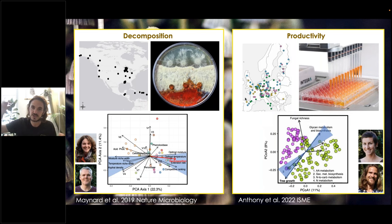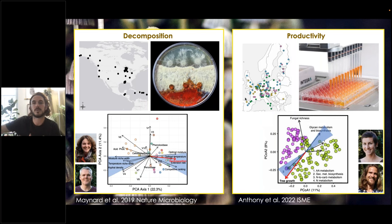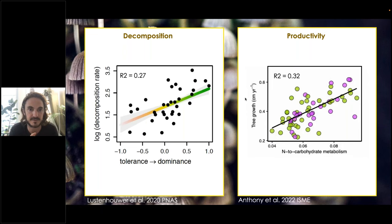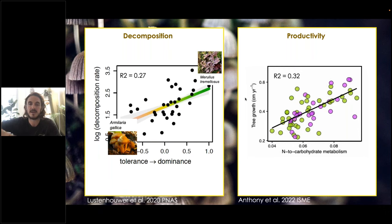Combining all this information into a principal component analysis again shows trade-offs in trait expression across all fungal communities. On the right-hand side we see microbial communities promoting decomposition and breakdown of carbon-rich compounds, whereas on the left-hand side it's the processing of nitrogen-rich compounds, which are most important for facilitating tree growth. Because of this trade-off, we can now start to see which types of traits facilitate tree growth more than others. In both cases, we were able to explain around 30% of the variation in communities. We could see that communities dominated by certain conservative, slow-growing fungi slow down decomposition leading to long-term carbon storage, whereas other species like Morelia were much more rapid, facilitating active and rapid decomposition.